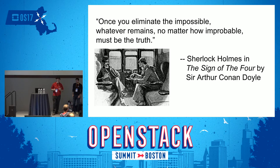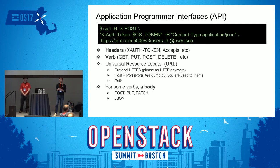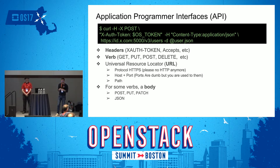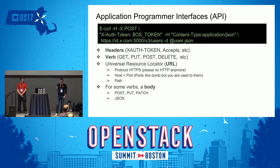Every operation in OpenStack is performed through API calls over HTTP or HTTPS. Each HTTP request has headers — the token in the form of the X-Auth-Token header — as well as the verb of the operation, which can be GET, PUT, POST, DELETE, or PATCH. There's also the URL, which includes the endpoint ID and path on the server. And for some operations, there's a body for POST, PUT, PATCH in JSON. Nova relies heavily on this body for performing actions.